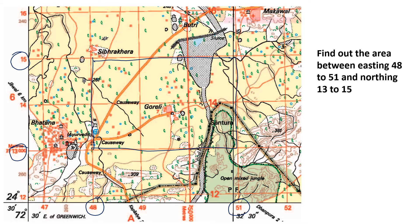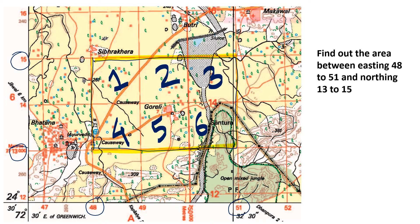So we have to find out the area of this region. Let me highlight it. So here is the area we have to find out. How many grids are we covering? Grid number 1, grid number 2, grid number 3, grid number 4, grid number 5, and grid number 6. So the answer is 6 square kilometers.